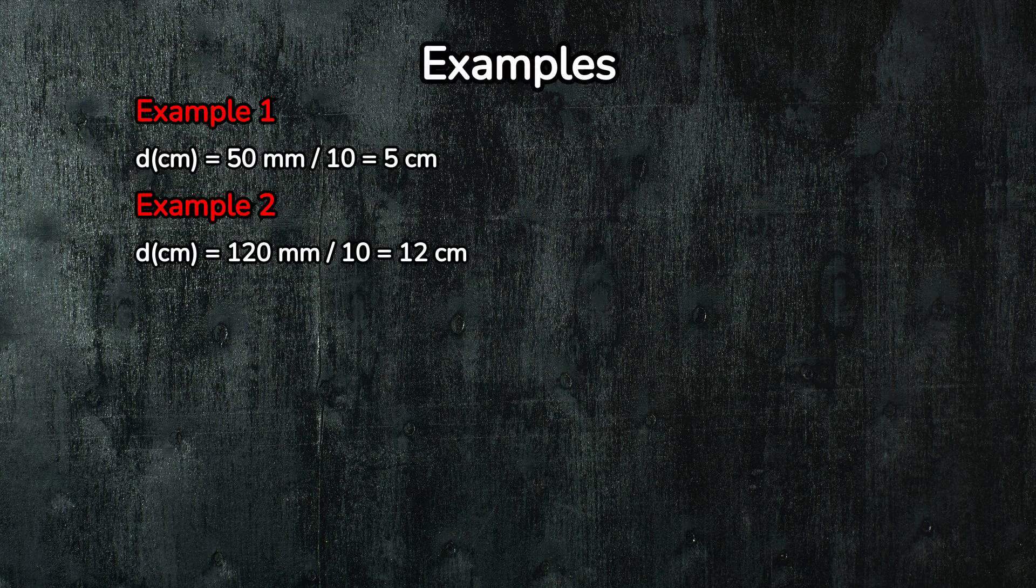Let's break it down with a few examples. Example 1: suppose you have 50 millimeters and you want to convert it to centimeters. You divide 50 by 10, which gives you 5 centimeters. Easy peasy.